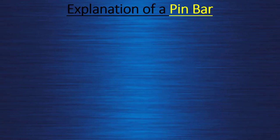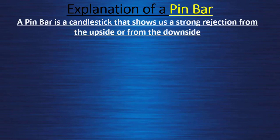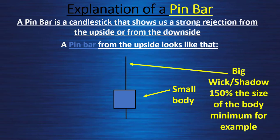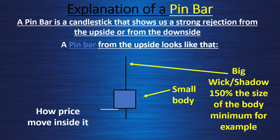Before we go through the entire lesson, let me review what a pin bar is. A pin bar is a candlestick that shows a strong rejection from the upside or from the downside. A pin bar from the upside has a small body and a big wick or shadow — at least 150% the size of the body. The price starts low, goes a little bit lower, goes all the way up, then retraces all the way down to finish near the open. This shows a very strong rejection of the level of resistance.